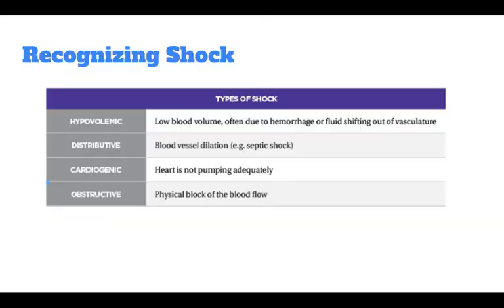There are four types of shock that we are going to discuss: hypovolemic, meaning low blood volume, often due to hemorrhage or fluid shifting out of the vasculature; distributive, which is blood vessel dilation or septic shock; cardiogenic, which results from when the heart is not pumping adequately; and obstructive, which is the physical block of blood flow.